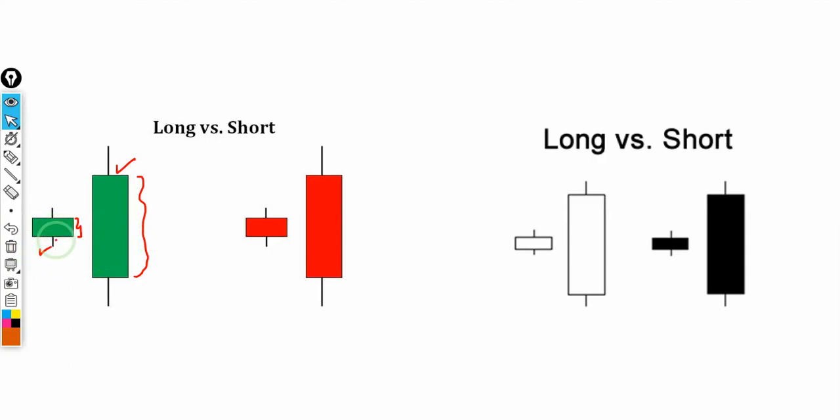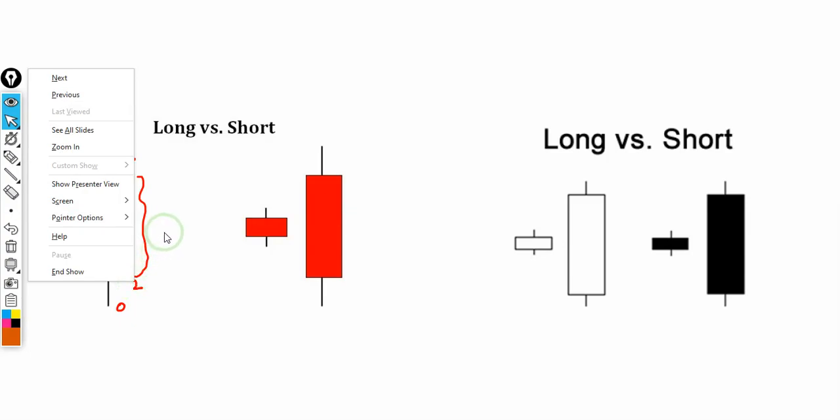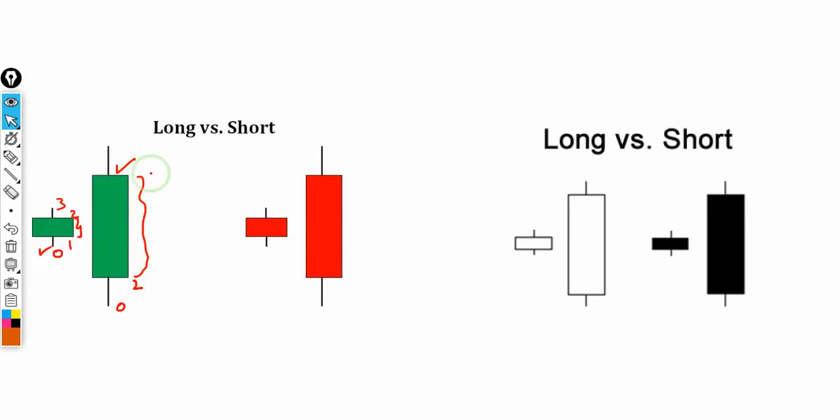For example, here the values could be zero, one, two, three, whereas here these values would be zero, two, seven, and nine. So here the increment is plus one, whereas here the increment is plus five.